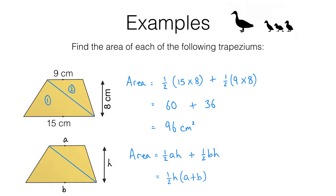It is worth learning the formula — it will come in handy when we do some more advanced problems. But for questions where you just have to find the area of a trapezium and you're given all the measurements, it's quite helpful just to think of it as the area of two separate triangles.